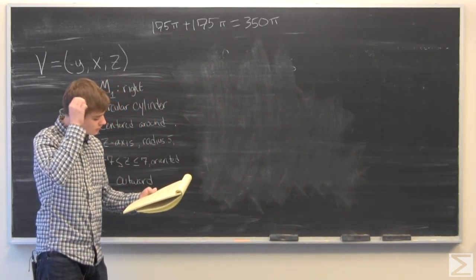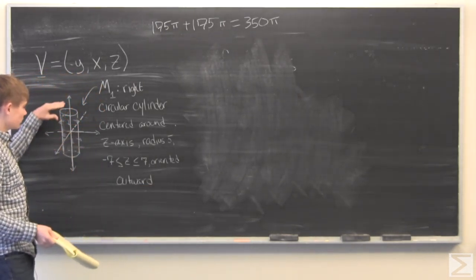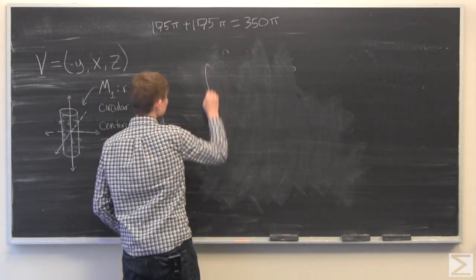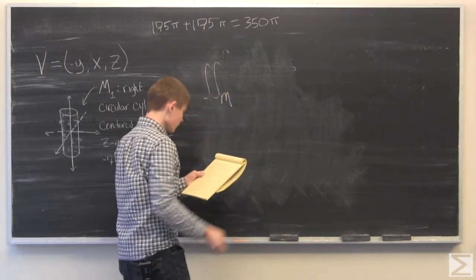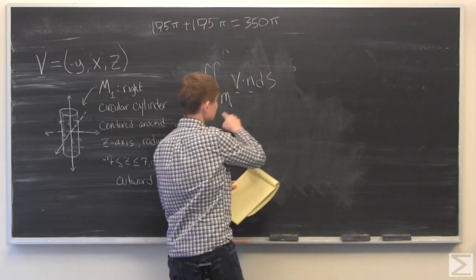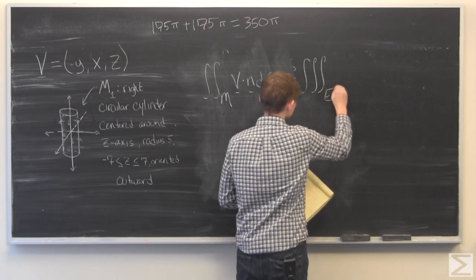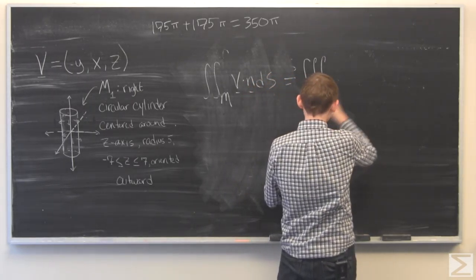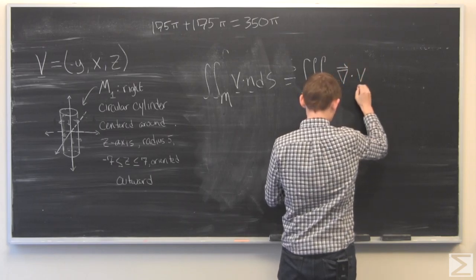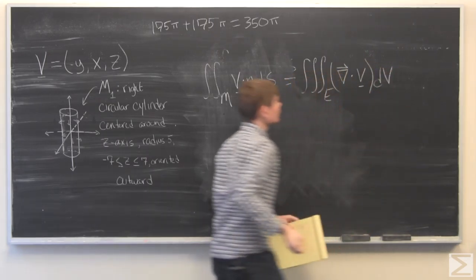And now we have to do the last really computational step of part C, which is calculate the flux of V through M using the divergence theorem, where M is this closed surface with these two disks. So what we're going to do is use the divergence theorem, and since it's a closed surface, this is also equal to the triple integral over the solid of the gradient dotted with the vector.